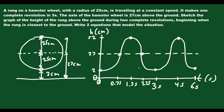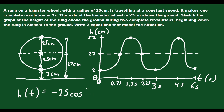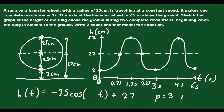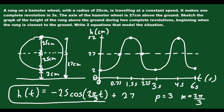Now we have to come up with two equations. The first one looks like an upside-down cosine, so h(t) equals negative 25 cosine of (k·t) plus 27. The amplitude is just your radius, which is 25, and the midline is 27. The period is 3 seconds, so k equals 2π divided by 3. The first equation is h(t) equals negative 25 cosine(2π/3 · t) plus 27.